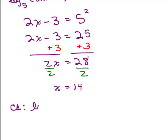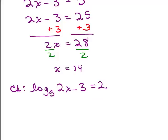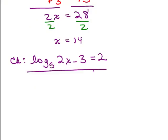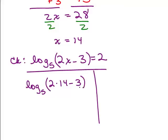But you can also completely check it by plugging it back into the original. So we're going to check log base 5 of 2x minus 3 equals 2. Go ahead and really plug that number in for x. So we have log base 5 of 2 times 14 minus 3. So we have the log base 5 of 28 minus 3, well 28 minus 3 is 25.